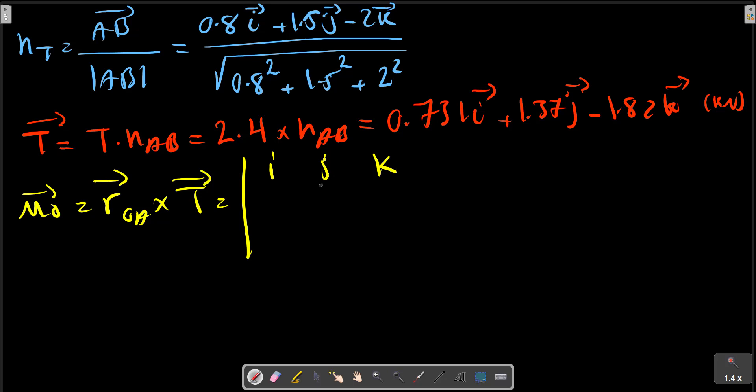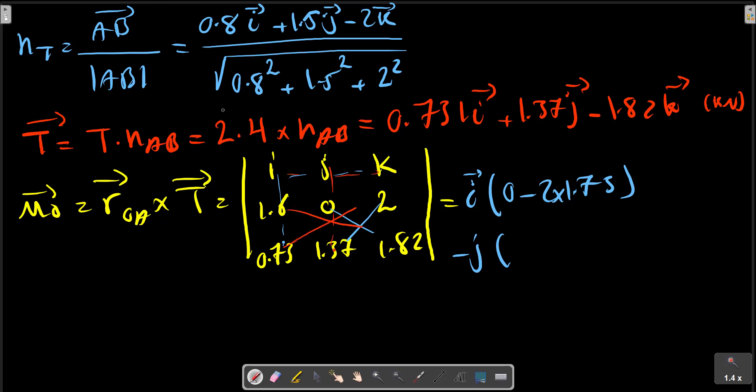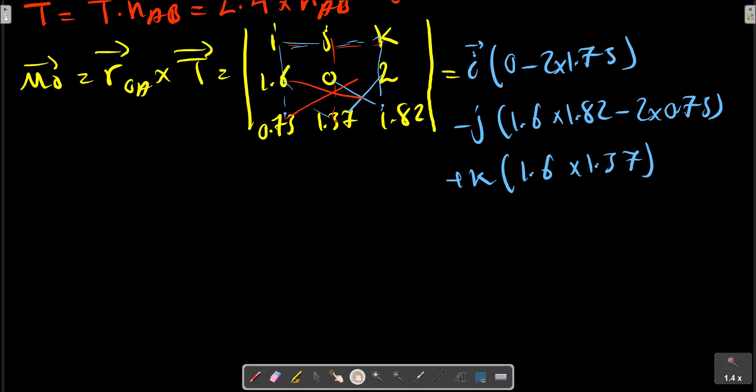R calculated before, R is in the j direction. So we can update R and compute M_O.